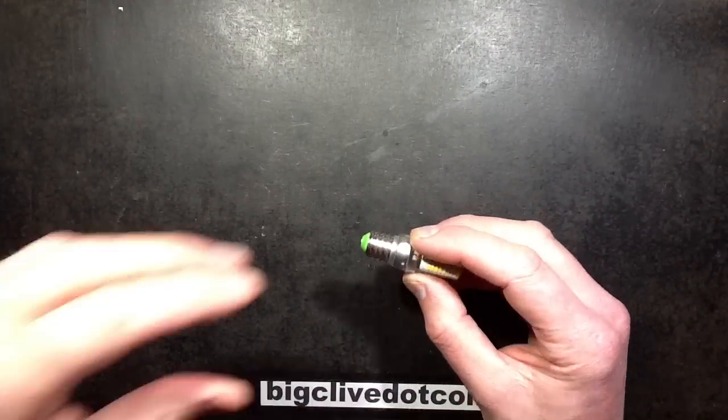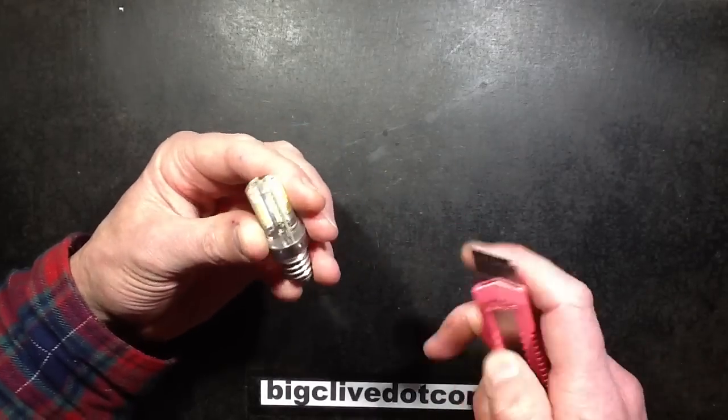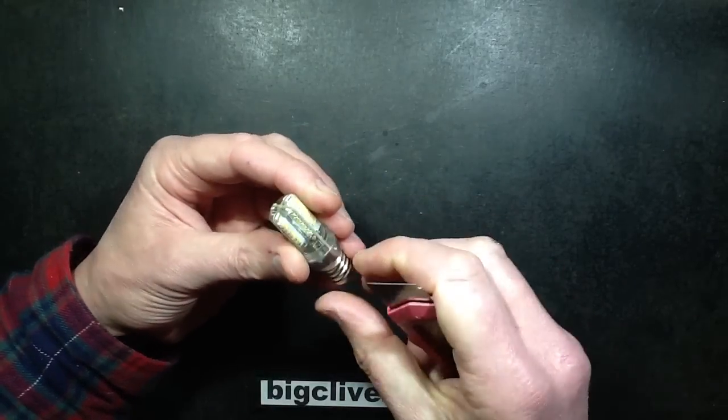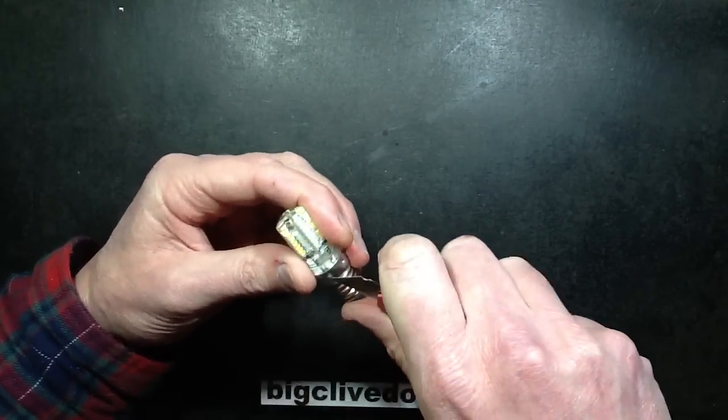Let's put that out of the way and open this up to see what it's like inside. I'm guessing it's a capacitive dropper because I can actually see some surface mount capacitors, one on either side of the board.